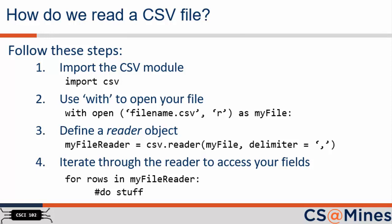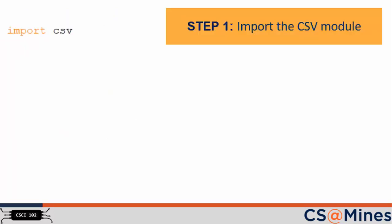There are four basic steps when reading a CSV file. Take a moment to read through these steps yourself. We will then work through each step in more detail with an example. Step 1: import the CSV module. Once the CSV module is imported, you have access to useful functions for files that are in CSV format.